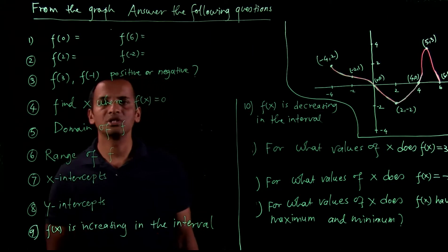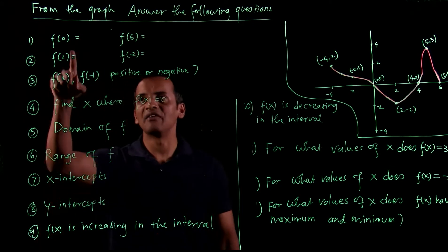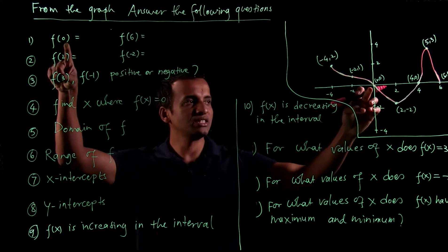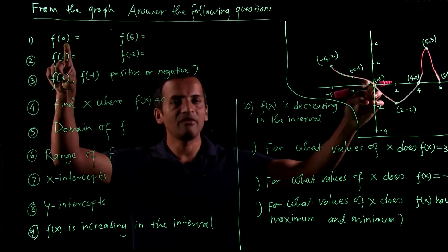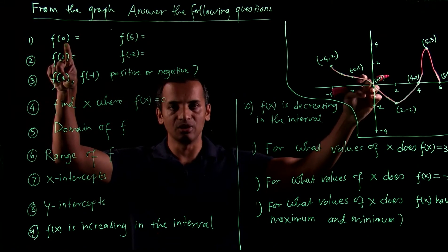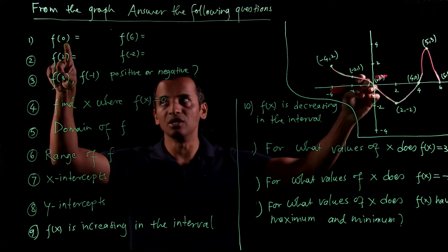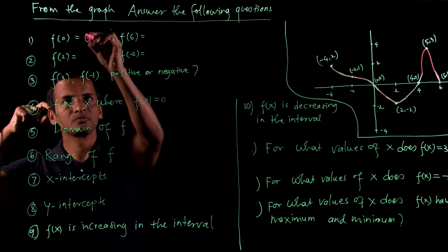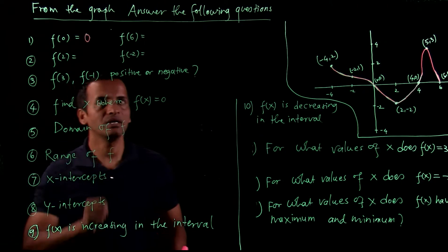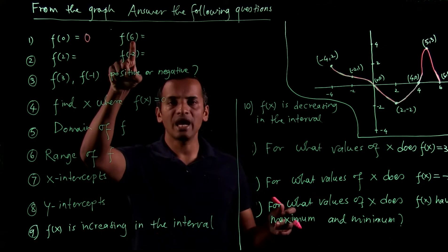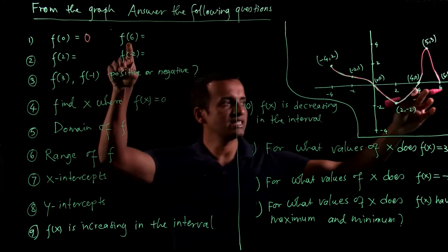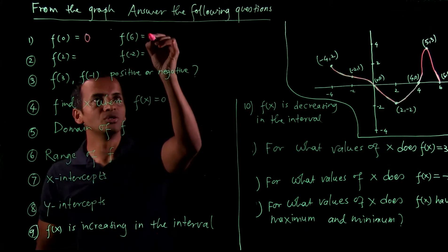The first question is: what is f when x is 0? That is, f(0). When x is 0, f(x) is basically 0 — that is, y is 0. So the answer is 0. The second question is: when x is 6, what is f? So f(6) is also 0.